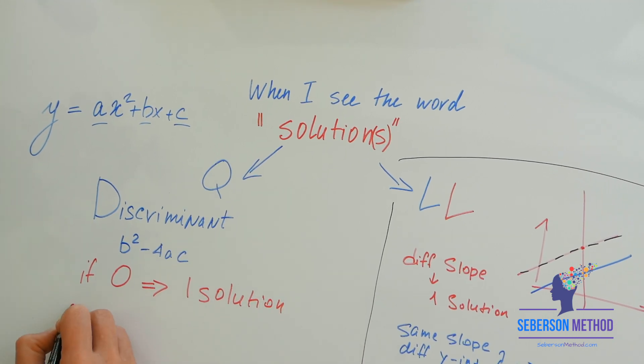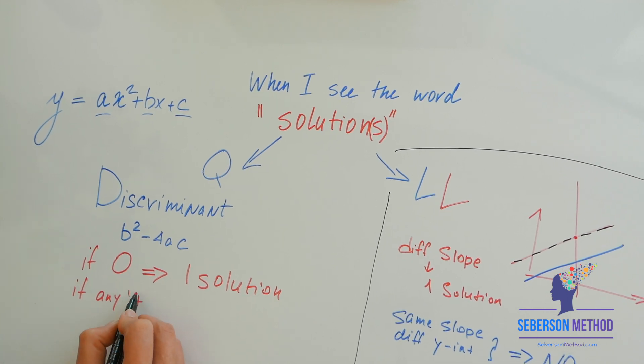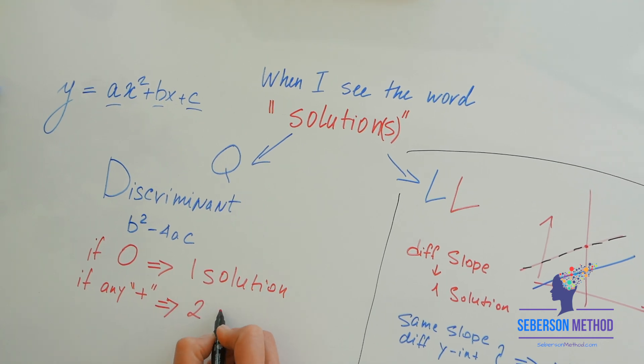If your discriminant is any positive number, you're going to have two solutions.